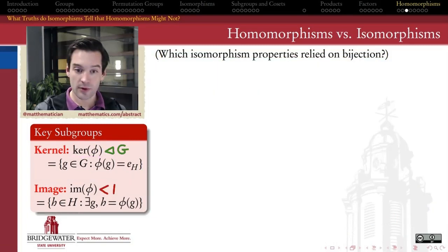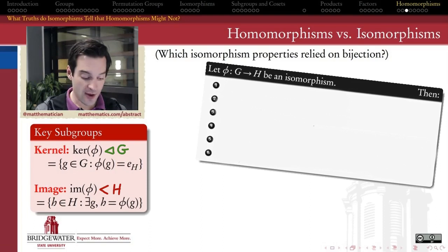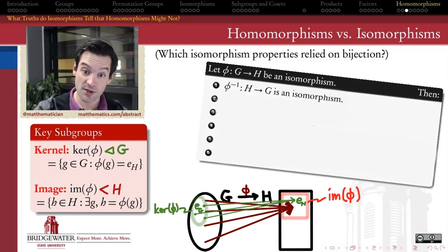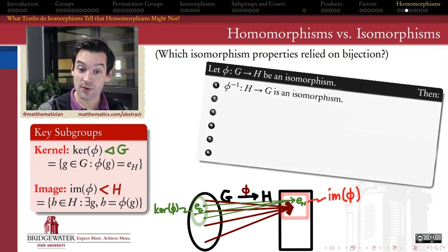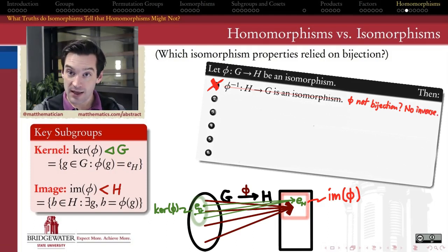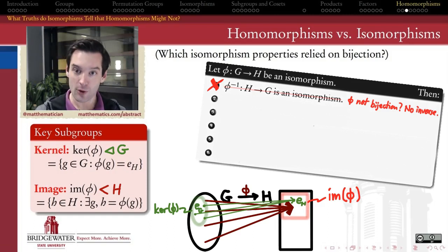One or two more properties we want to look at — these operate not at the level of elements, but at the level of entire substructures, subgroups inside of the groups that a homomorphism connects. When phi was an isomorphism, there existed an inverse isomorphism going the other way. But for a general homomorphism, if phi is not a bijective function, it won't even have an inverse function. So the only homomorphisms that have inverses are isomorphisms themselves — that's an if-and-only-if criterion.